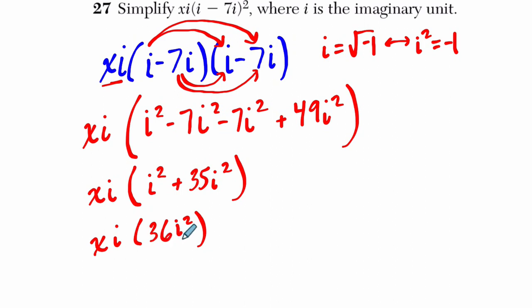Now, i squared is negative 1. So this is really just negative 36, right? Times xi. And that's negative 36xi. And that is the answer.